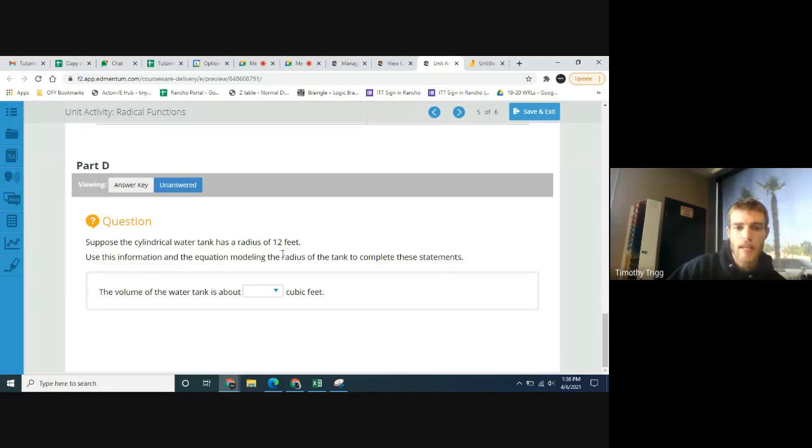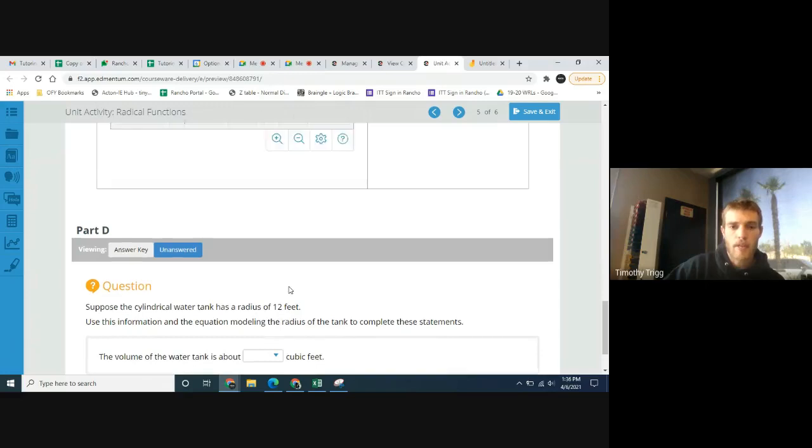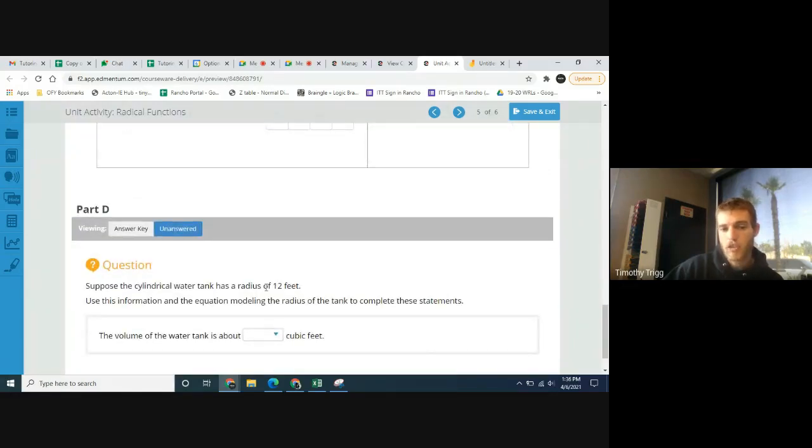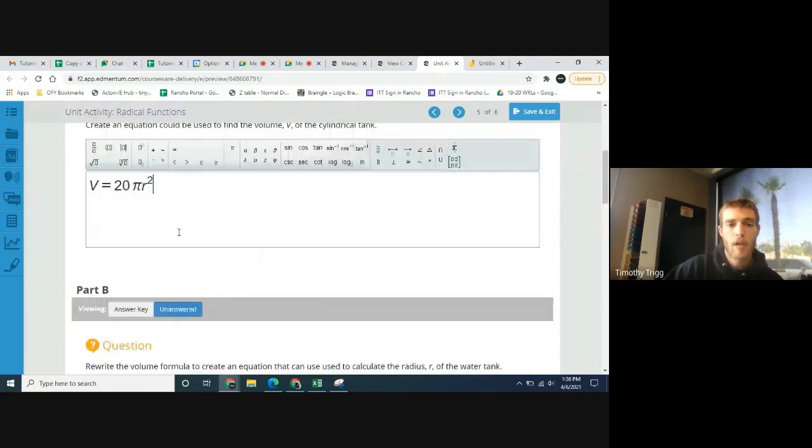Now using that, suppose the cylindrical tank has a radius of 12 feet. Use this information and the equation modeling the radius of the tank to complete these statements. The volume of the water tank is about blank cubic feet. So 12 feet is the radius. So find the volume. It's volume equals 20 times pi times r squared. But in this problem, they're saying the radius is 12 feet. We're going to replace the r with 12.